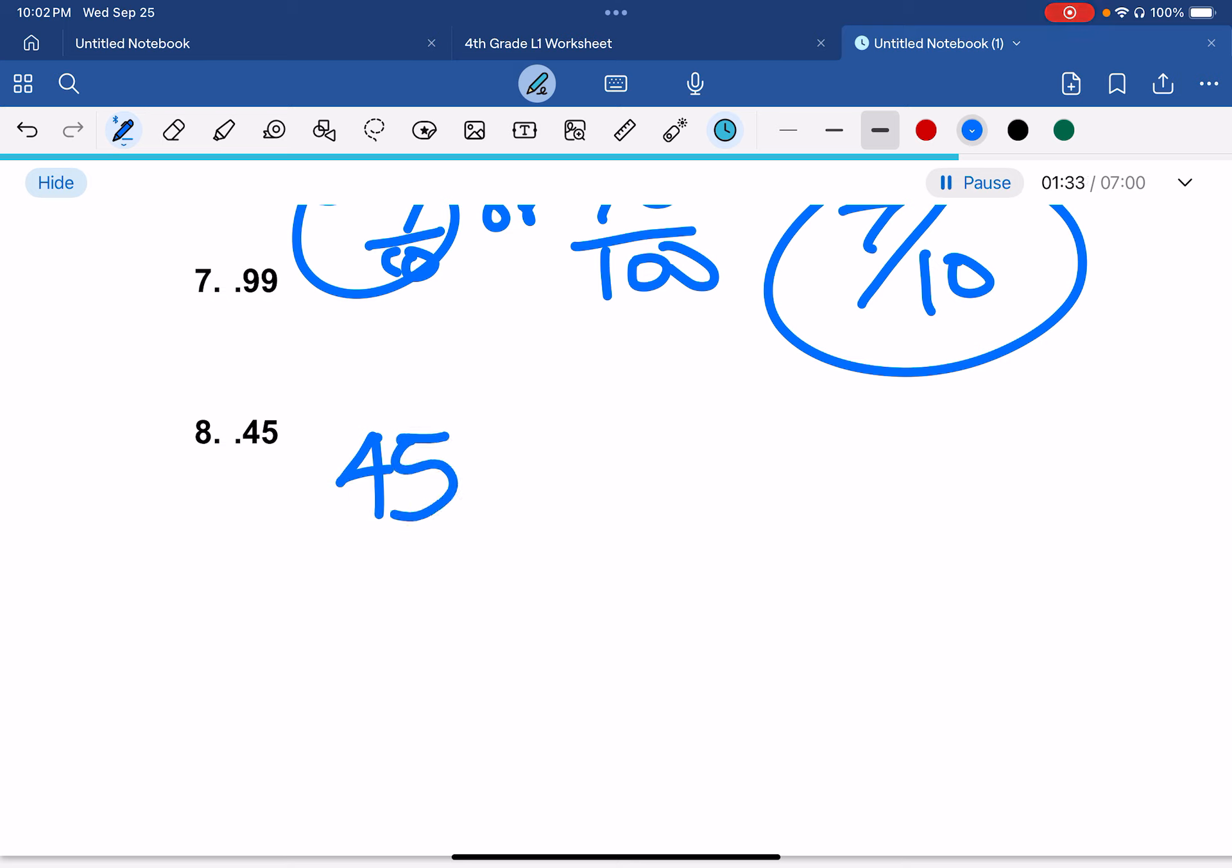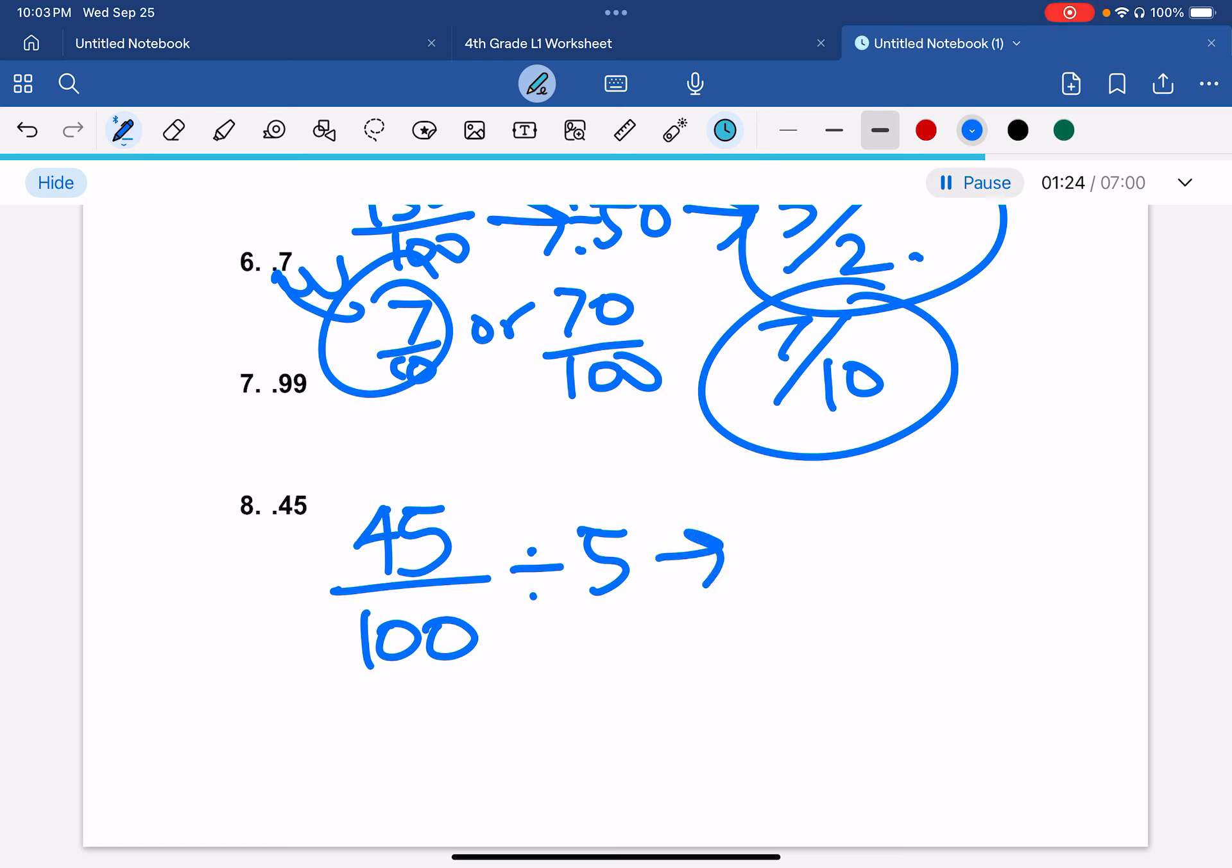And then 45, that would be 45 out of 100. And we can divide this by 5, which would give us 9 over 50.